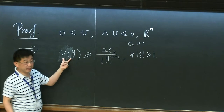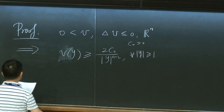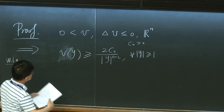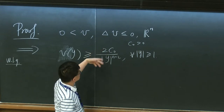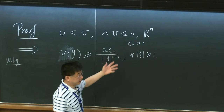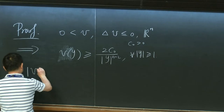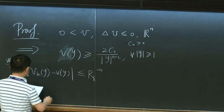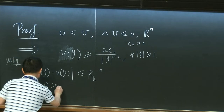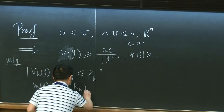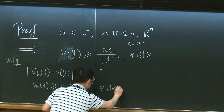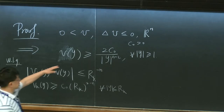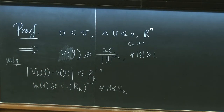Then we can pass to a subsequence. We may assume without loss of generality, by passing to a subsequence and by shrinking RK smaller and making C0 smaller, that VK(Y) minus V(Y) is very close to this V. We just make this RK smaller but still going to infinity, and maybe make C0 a little bit smaller, and we will have this inequality.